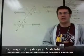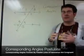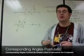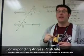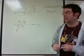The corresponding angles postulate states that if a corresponding pair of angles is formed by two parallel lines and a transversal, then corresponding angles are congruent to each other. Let's take a look at an example.